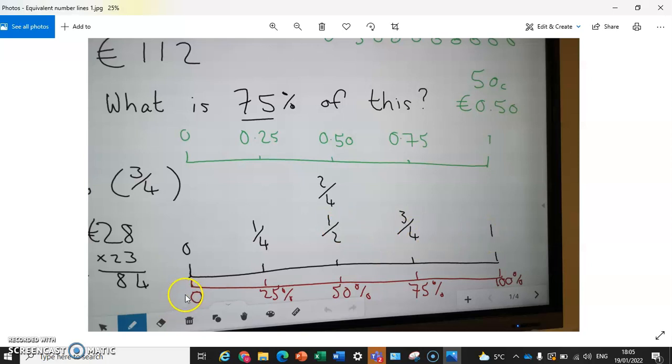Now, if we do a similar number line below in red here, and we start with zero up to one, or a hundred percent, and we break it in half, we get 50%, two fifties are a hundred. So this is 50%.